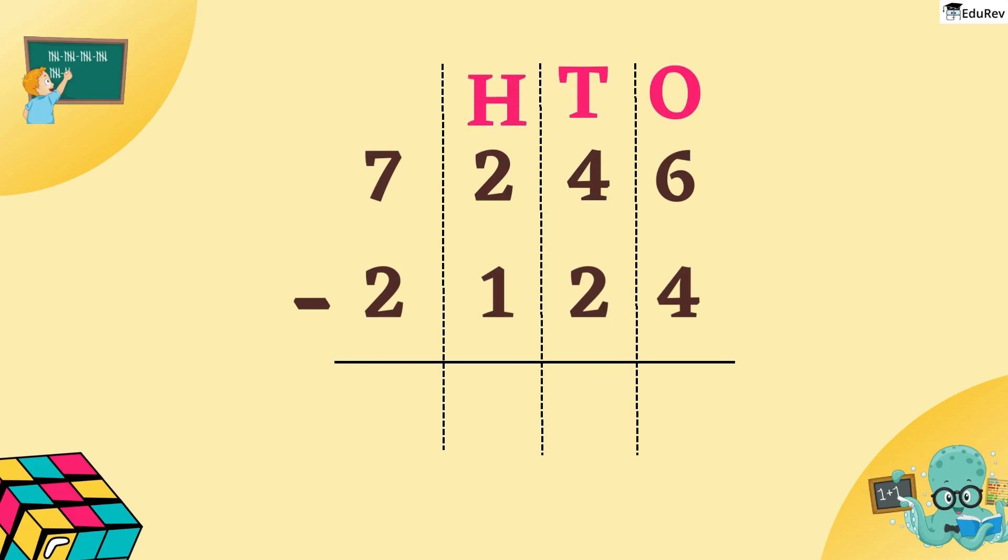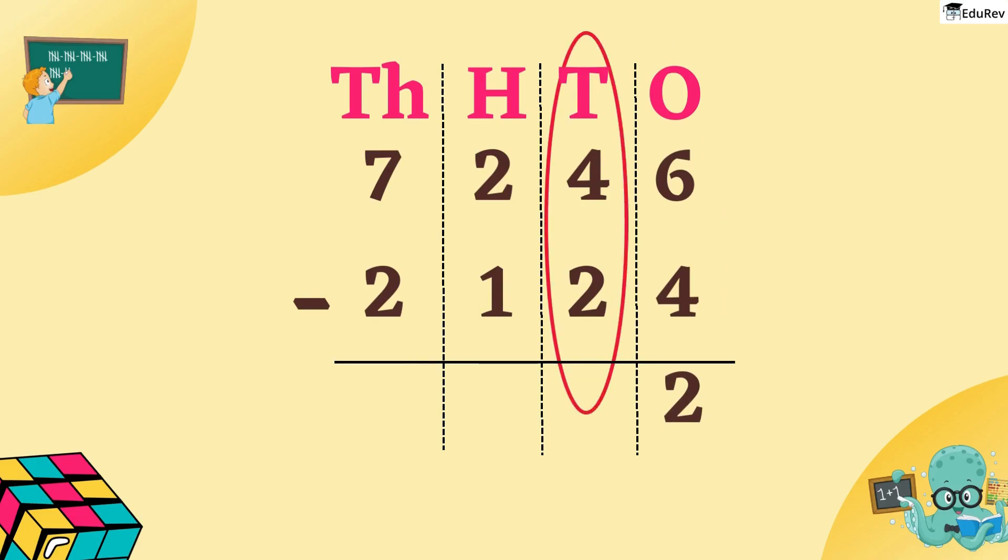We will make columns with their place values like this: 1s, 10s, 100s and 1000s column. We use the short form TH to show the 1000s column. Start by subtracting from the 1s column. 6 minus 4 is equal to 2.